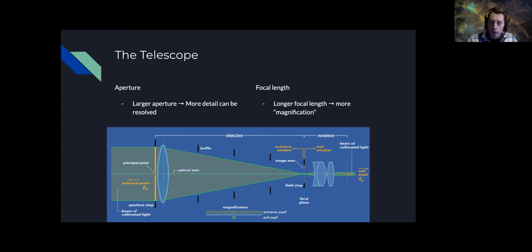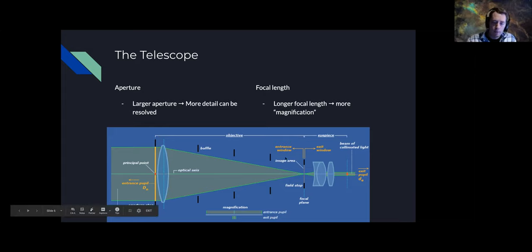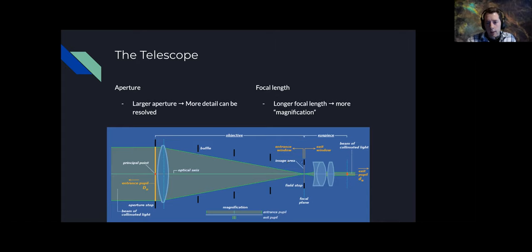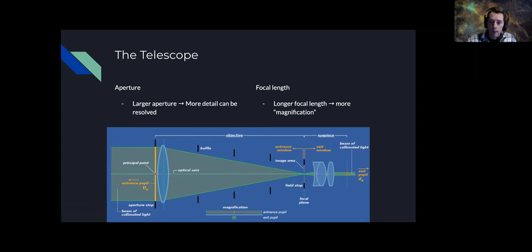The flip side is focal length. The longer the focal length, the more magnification — in quotes, because visually you get magnification with an eyepiece. For imaging, that translates into a pixel scale, a finer pixel scale by which you can sample the sky. This figure shows the general construction of a refractor with an objective lens or lens cell, baffling along the inner tube to cut out stray light, and the image sensor at the imaging plane.